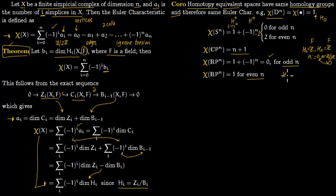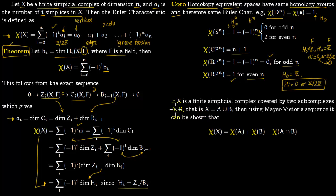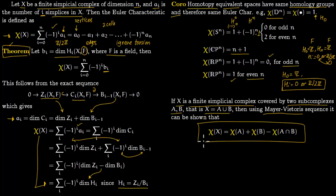So for RP^n with n odd, ignoring torsion you only have contributions from dimensions 0 and n, giving 1 + (-1)^n. Since n is odd this becomes 1 - 1 = 0. For RP^n with even n, H_0 = Z and every other homology group is either zero or Z mod 2Z (torsion, which we ignore), so you just have Z in dimension 0, giving Euler characteristic 1. If x is a finite simplicial complex covered by two subcomplexes A and B with x = A union B, then by the Mayer-Vietoris sequence, χ(X) = χ(A) + χ(B) - χ(A ∩ B), the standard inclusion-exclusion formula.